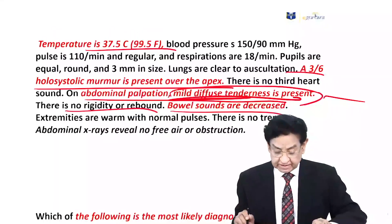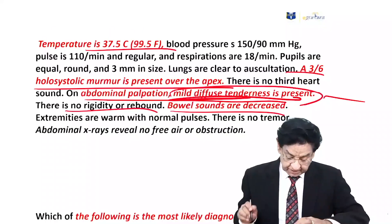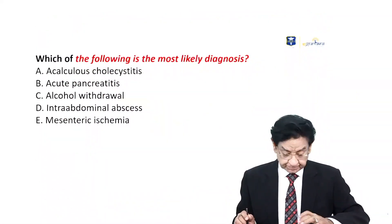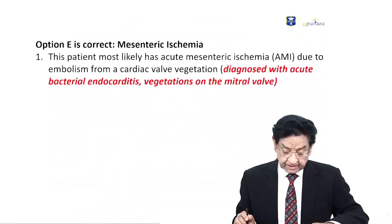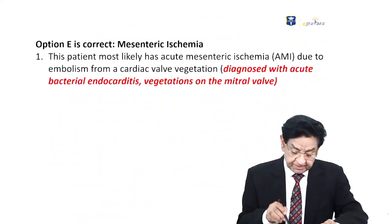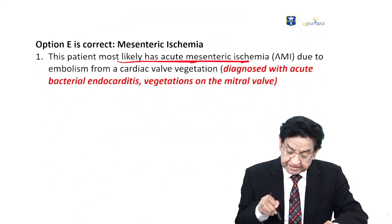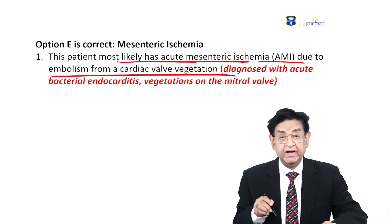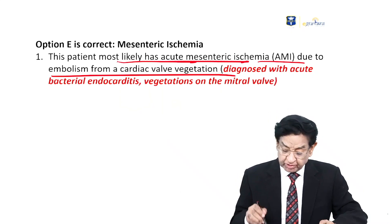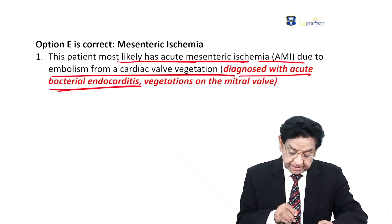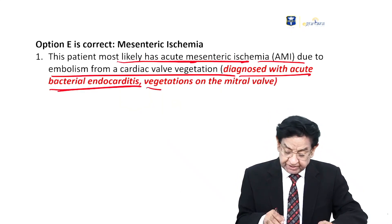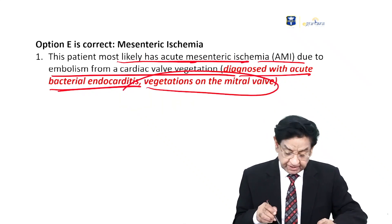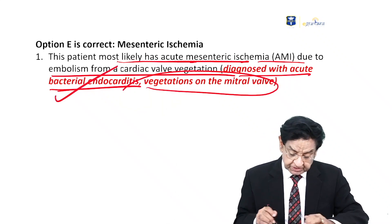The most likely diagnosis of this case is acute mesenteric ischemia, also called AMI, due to embolism from the cardiac wall vegetation. The patient has already been diagnosed with acute bacterial endocarditis and vegetation seen on the mitral leaflet is one of the diagnostic criteria of endocarditis.